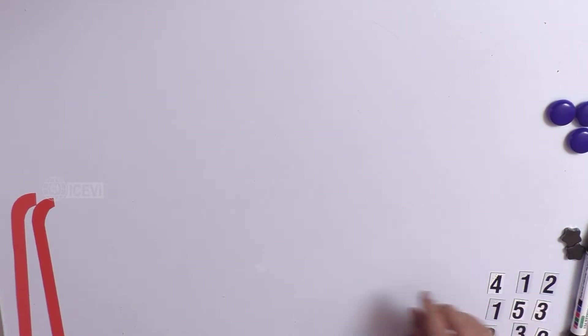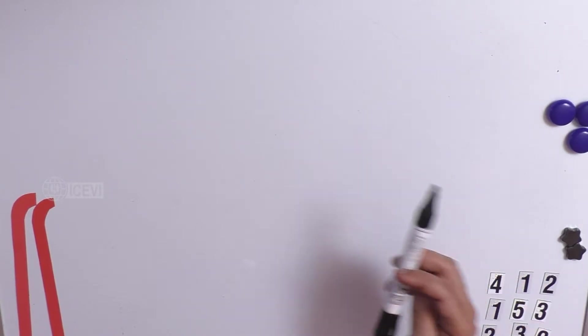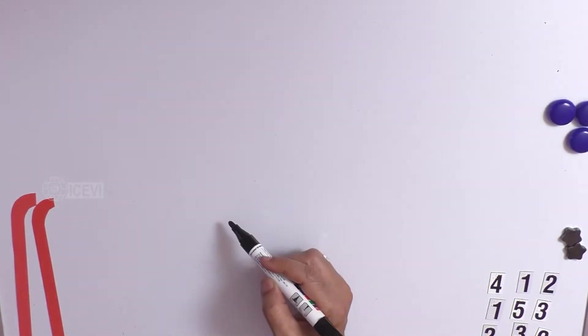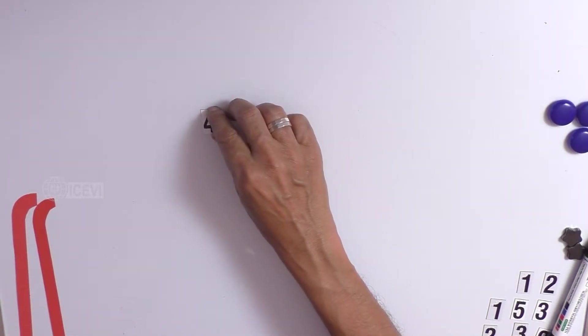We know what is a matrix. Matrix is an arrangement of numbers in rows and columns. Now, let us define different types of matrices.